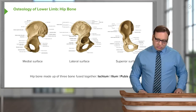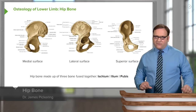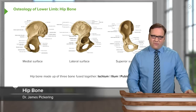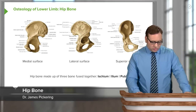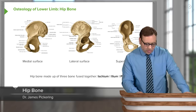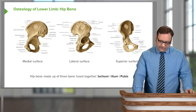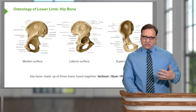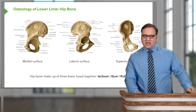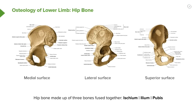Let's move on to looking at some of the important features of these bones. We'll start off with the hip bone. The hip bone is actually formed by three bones that are fused together, primarily at the acetabulum.